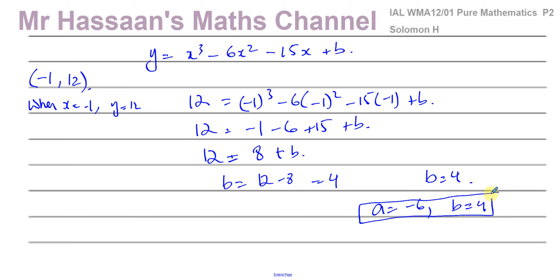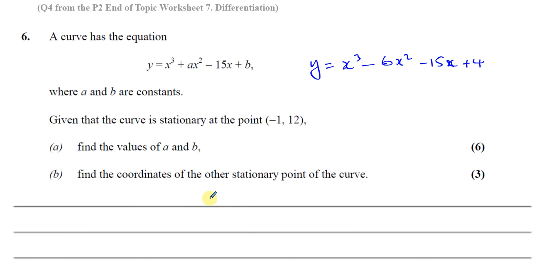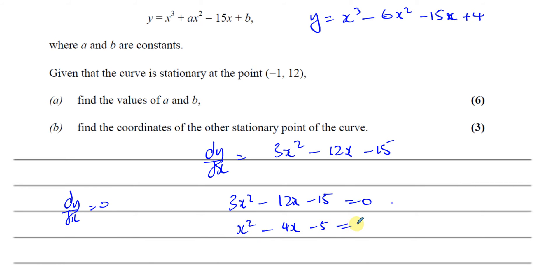That's the answer to part a: a equals negative 6 and b equals 4. For part b, we're asked to find the coordinates of the other stationary point. We've already determined a and b, so now we differentiate with all the values we have. We know that dy/dx is equal to 3x squared minus 12x minus 15. When dy/dx equals 0, we get a stationary point. So 3x squared minus 12x minus 15 equals 0, and dividing through by 3 gives x squared minus 4x minus 5 equals 0.